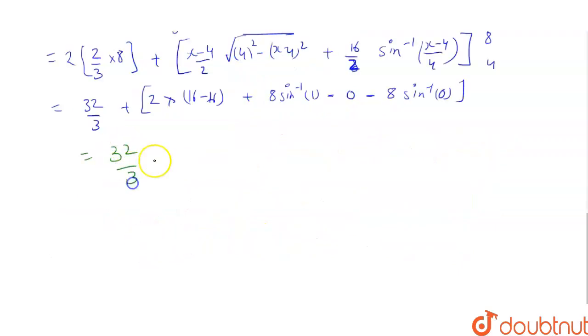On solving, this becomes 32 by 3, plus 8 pi by 2, that is 32 by 3 plus 4 pi. That is the required answer.